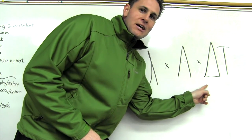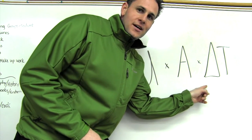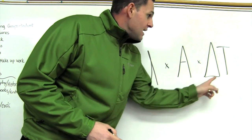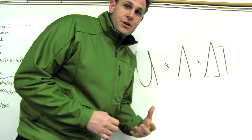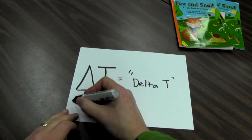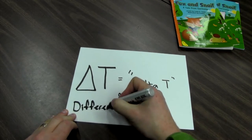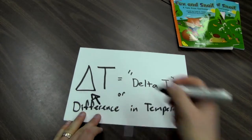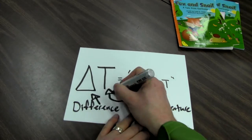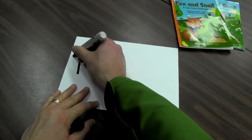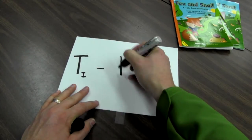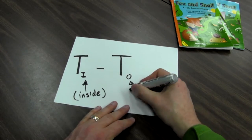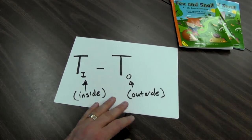Now this triangle here means delta — that's another word for difference. And the T stands for temperature. So when we talk about delta T, what we're talking about is the difference in temperature between two spaces. This is one of the most important factors that go into calculating our heat loss.